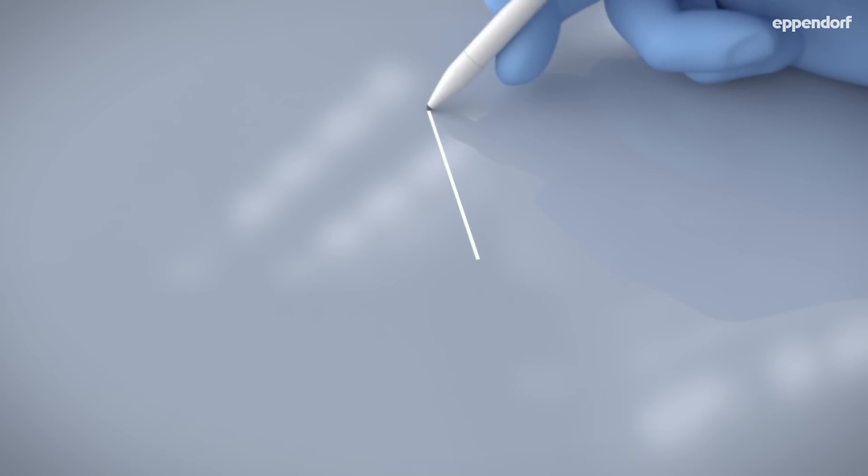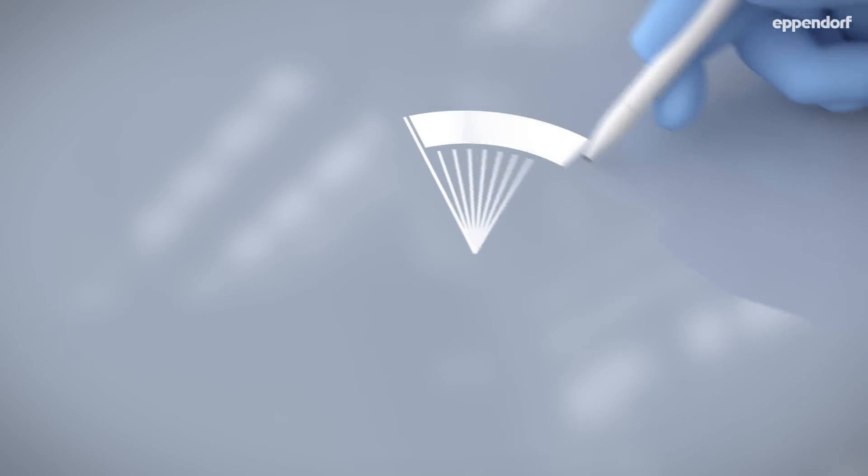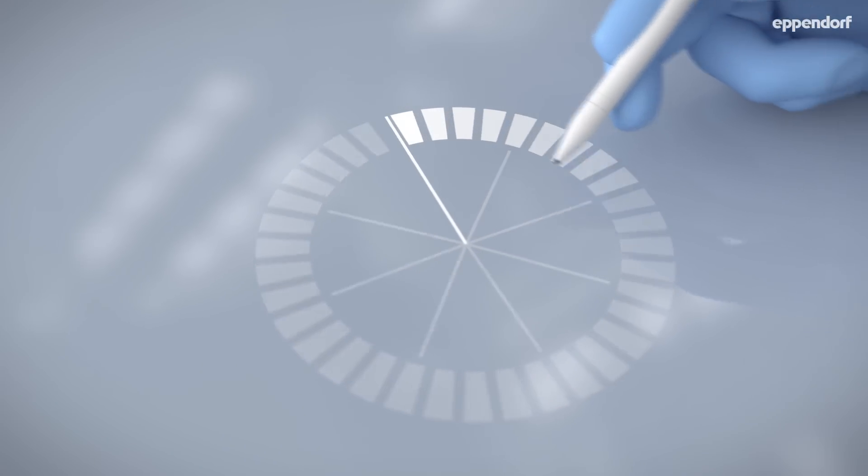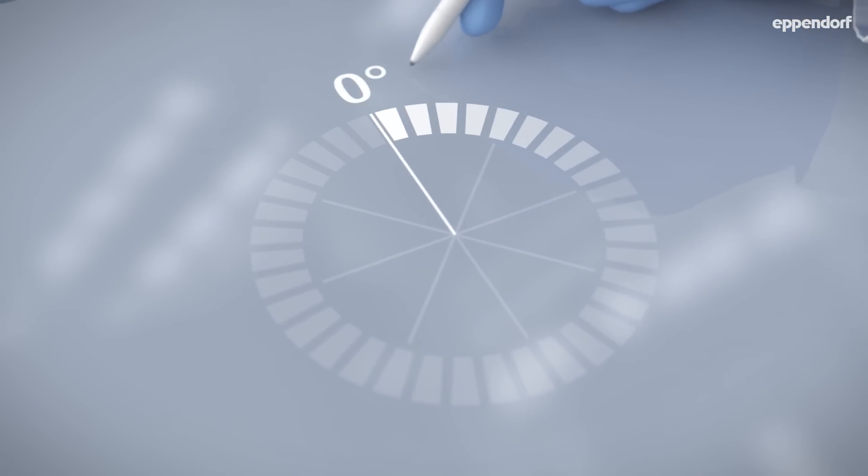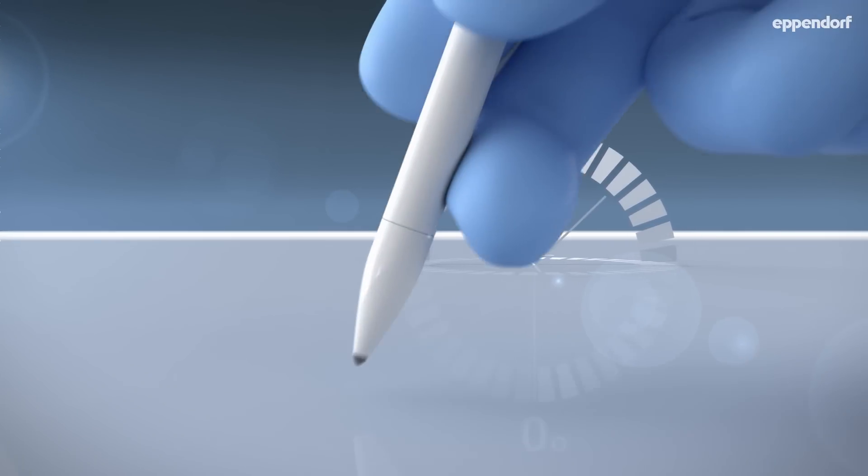Our second topic is the pipetting angle. When aspirating liquids, you need to hold the pipette as vertically as possible. I will show you why this is beneficial with a series of eight samples.